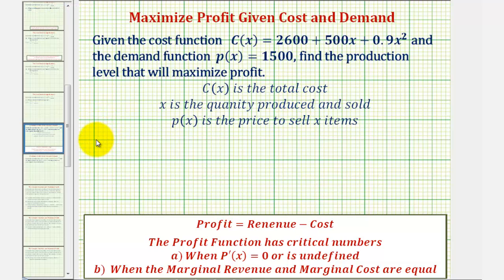For the revenue function R(x), it's equal to the price per unit, which is P(x) or P, times the quantity of items produced and sold, which is x. But we know P(x) equals 1500, so the revenue function is 1500 times x.